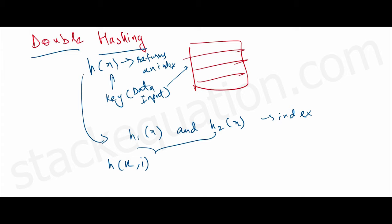Parameter i is the probe number, which can vary from 0, 1, 2, 3 up to m minus 1, where m is the number of indices available in the hash table. So h(k,i) equals (h1(k) + i × h2(k)) mod m.